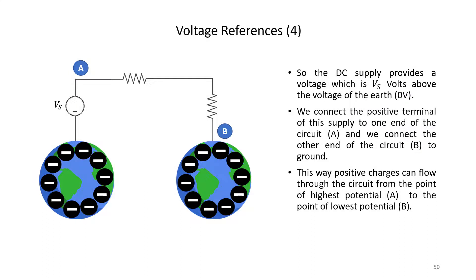So the DC supply will provide a voltage which is Vs volts above the voltage of the earth to which we have assigned a value of 0 volts. We connect the positive terminal of this supply, which is the point of highest voltage in the circuit, to one end of the resistor series which is indicated by the letter A, and we connect the other end of the resistor series to point B which is connected to the earth again.